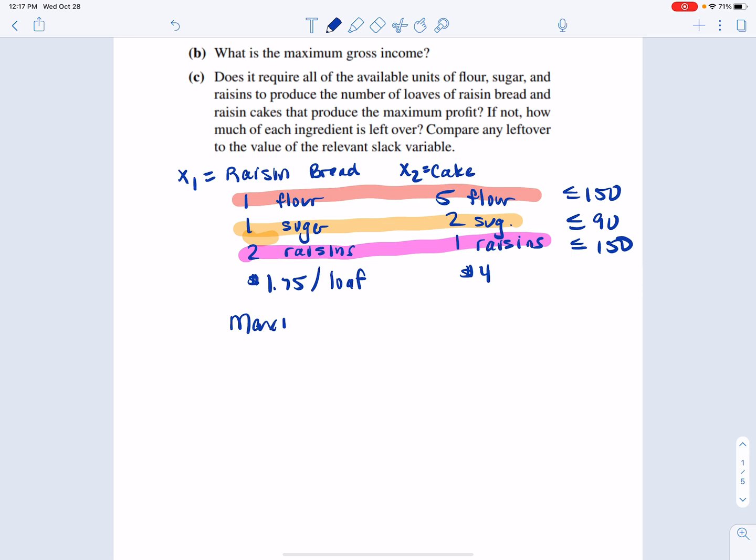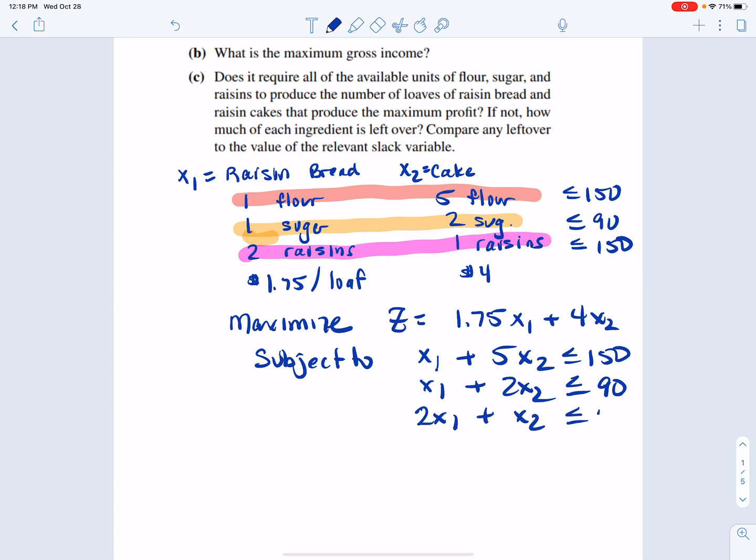So it looks like here's our linear programming problem. We want to maximize, and I'll call the objective function z because that's just what we do. It looks like 1.75x1 plus 4x2 subject to x1 plus 5x2 less than or equal to 150, x1 plus 2x2 less than or equal to 90, and 2x1 plus x2 less than or equal to 150. And an automatic constraint is that my variables have to be non-negative. So this is indeed a standard maximization problem, which therefore means we can solve it using the simplex method.